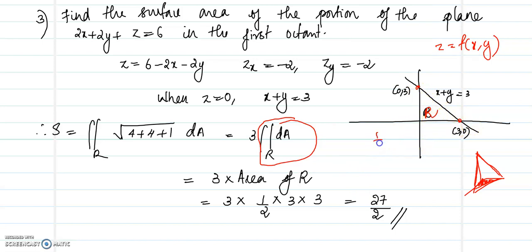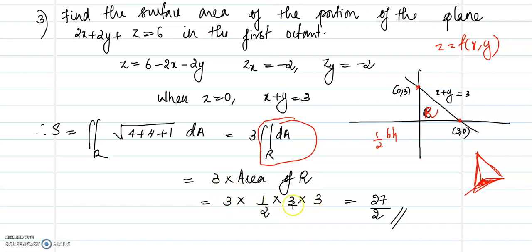The double integral over R of dA is simply the area of the triangular region R. Using the formula: area = ½ · base · height, with base = 3 and height = 3, the area of region R is ½ · 3 · 3 = 9/2. Therefore, the total surface area is 3 × (9/2) = 27/2.